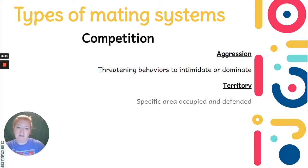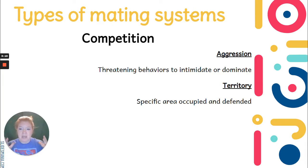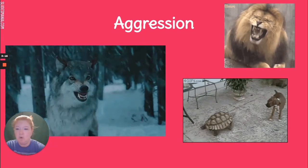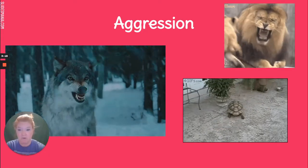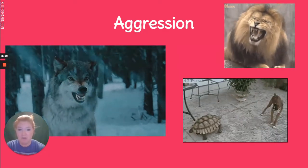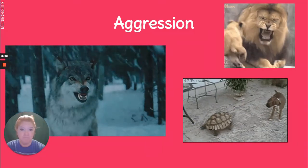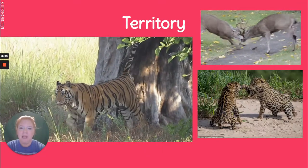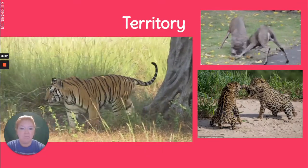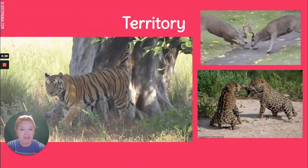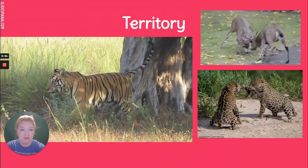And there's territory — a specific area will be occupied and defended. An animal is going to try to keep the animal it wants to mate with away from others. We can see signs of aggression, and some of that aggression is defending a territory. Here we can see a tiger marking a tree as a sign of indicating this territory.